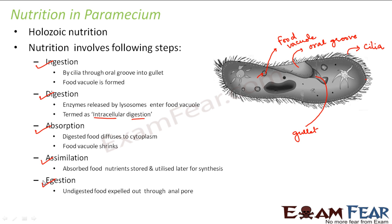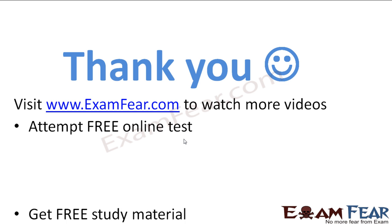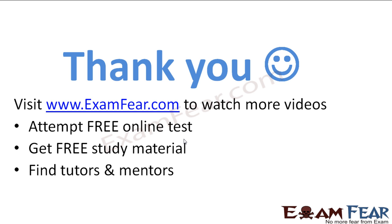So now we are getting some idea of how holozoic nutrition takes place in different animals. So far we were talking only about simple unicellular animals, where we have to deal with only one cell. Once we get into multicellular animals, the complexity increases to a very large extent because there are so many cells grouped together to perform specific functions. Please visit www.examfeo.com to watch more videos, attempt free online tests, get free study material, and find tutors and mentors. Thank you.